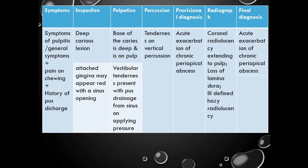Next condition: symptoms of pulpitis or general symptoms like fever and malaise, pain on chewing, and a history of pus discharge. This is a condition where you have a mix of acute abscess and chronic abscess. On inspection, deep caries lesion with attached gingiva appearing red with a sinus opening. On palpation, vestibular tenderness is present with pus drainage from the sinus on applying pressure. On percussion, tenderness on vertical percussion is present. Since the patient has features of both acute apical abscess and chronic abscess, the condition is diagnosed as acute exacerbation of chronic periapical abscess or phoenix abscess. On radiograph, loss of lamina dura and ill-defined hazy radiolucency at the periapex. Final diagnosis: phoenix abscess.